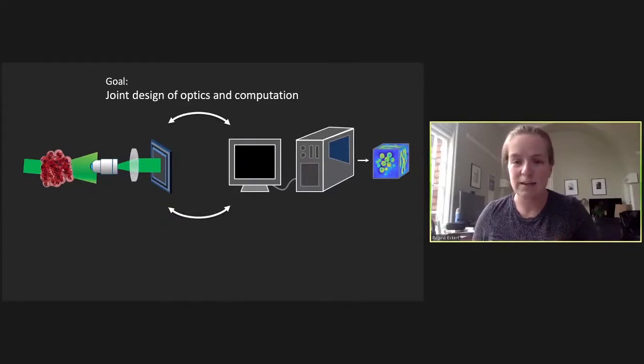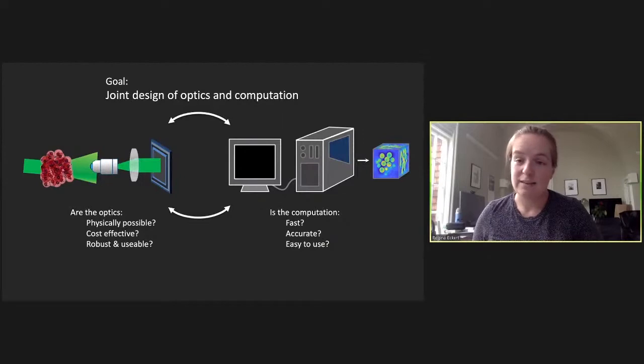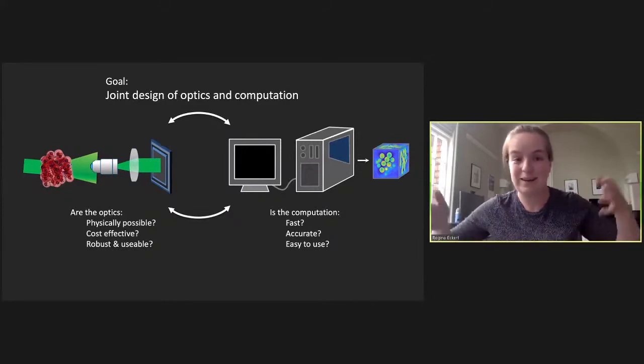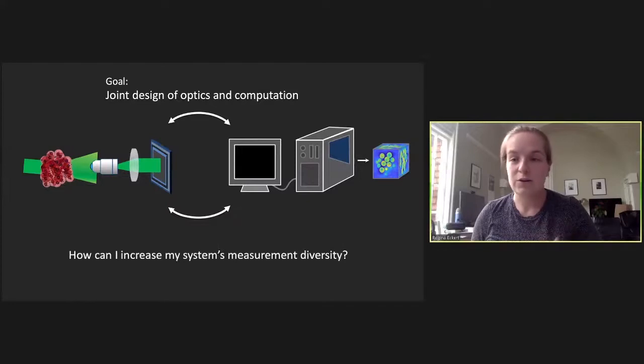But I think something that we're all really interested in asking is, how can I actually make this problem work better? And I think what we've all really seen is that in order to do this, we do have to consider both sides of the equation here. We have to understand how can we optimize both our optics and our computation together to make a better computational imaging system. But this is a really hard problem, right? There's a lot of different design considerations, both on the optics side, where we're asking things like, are the optics actually physically possible? Are they cost effective? Are they robust and usable? And then on the computation side, we're asking things like, is it fast? Is it accurate? Is it actually easy to use?